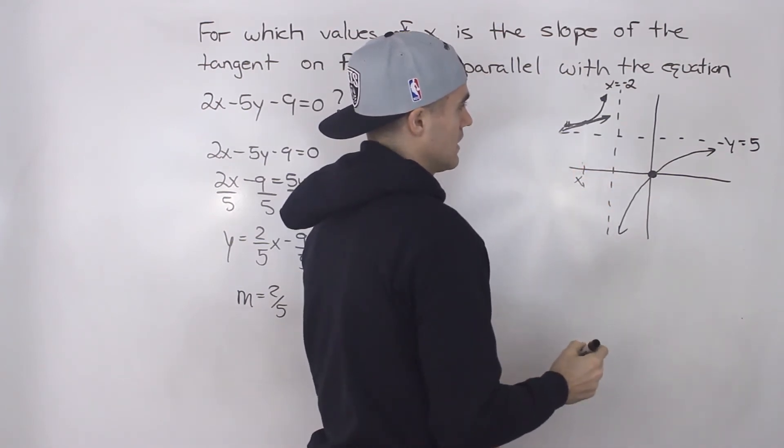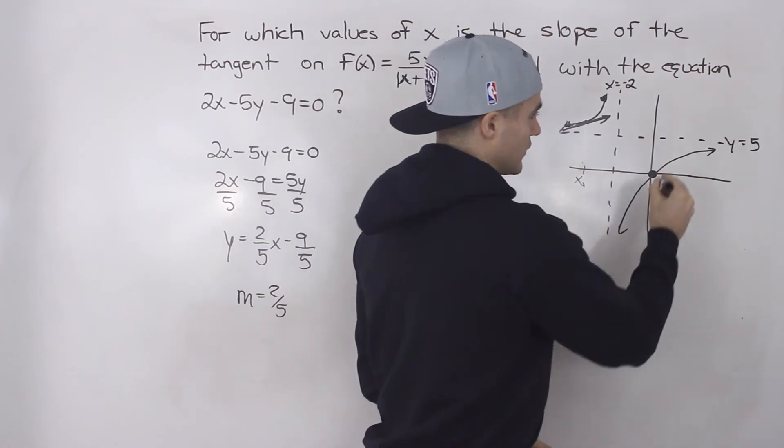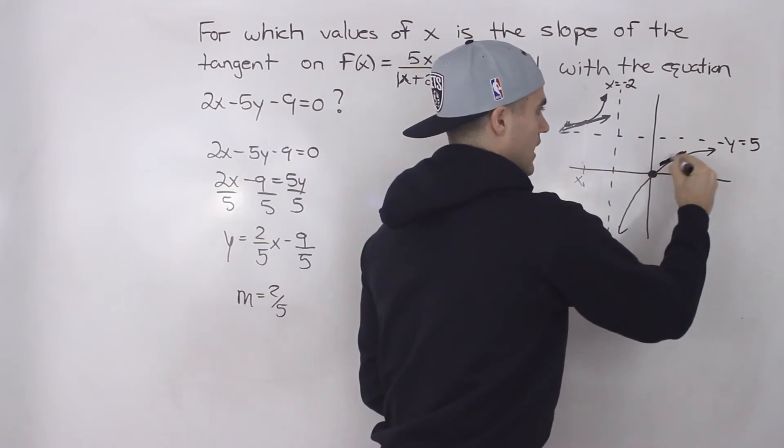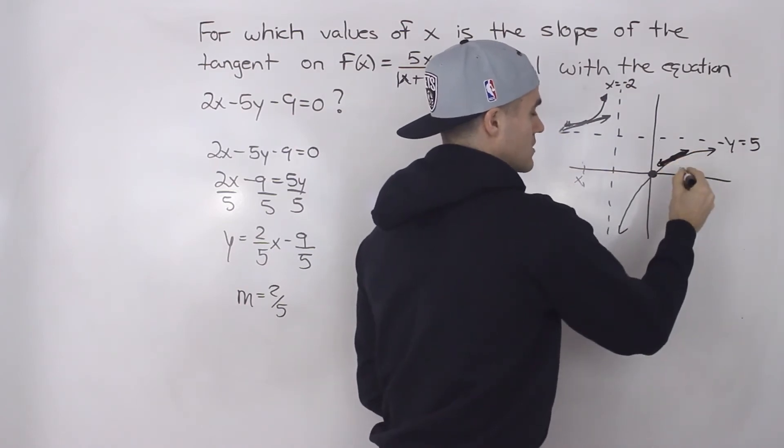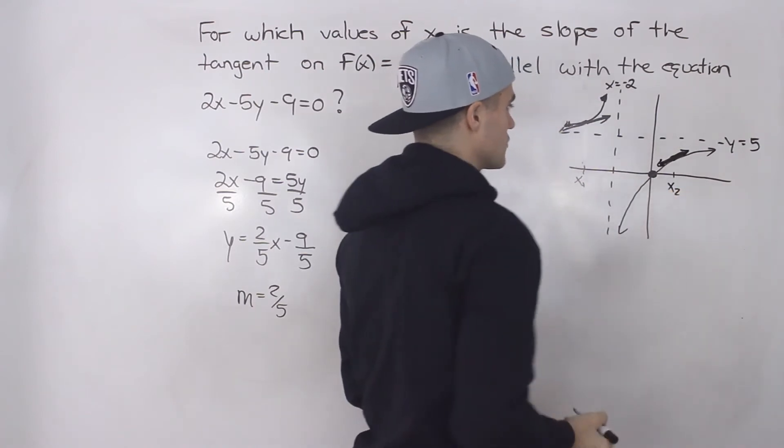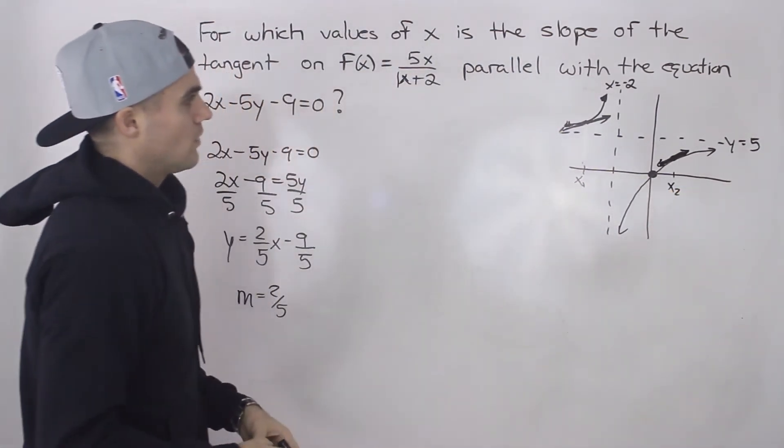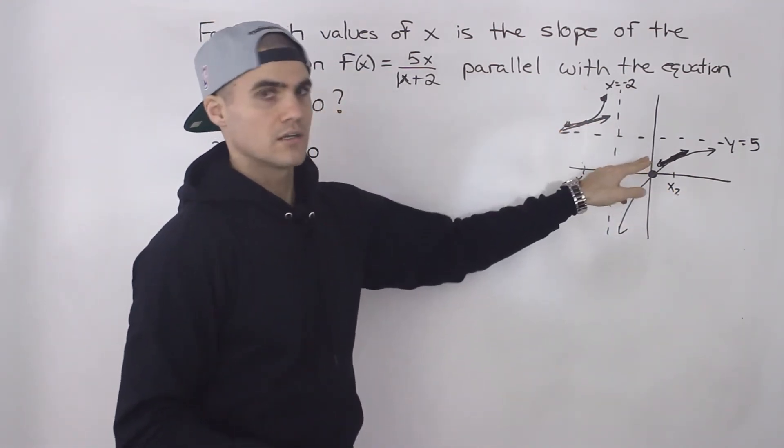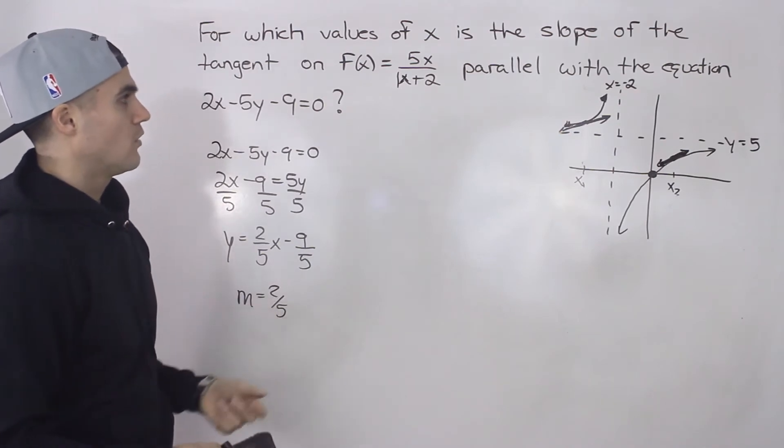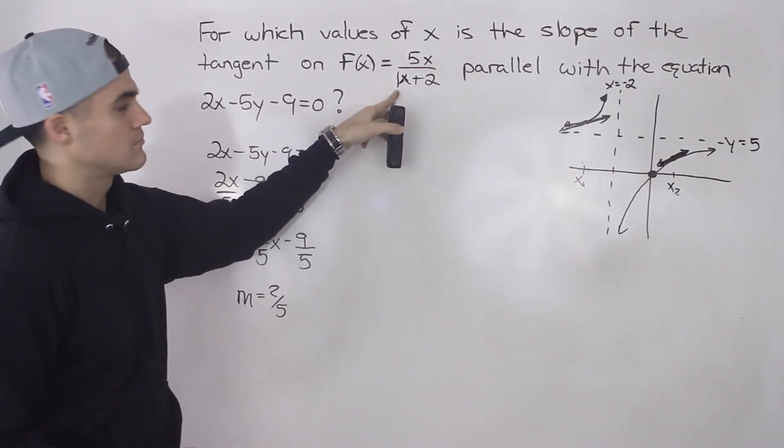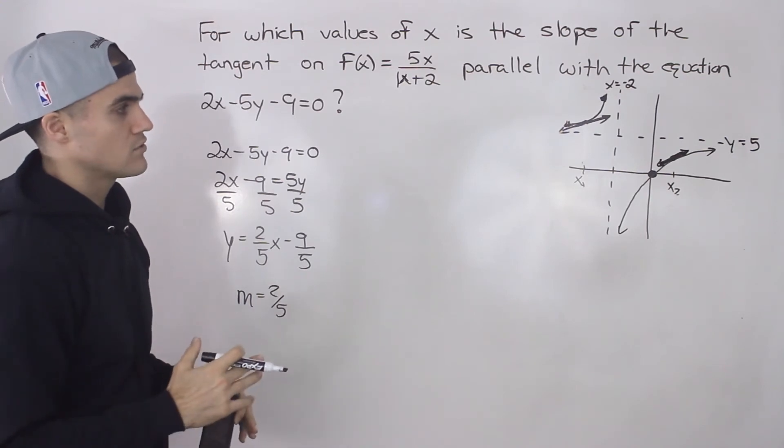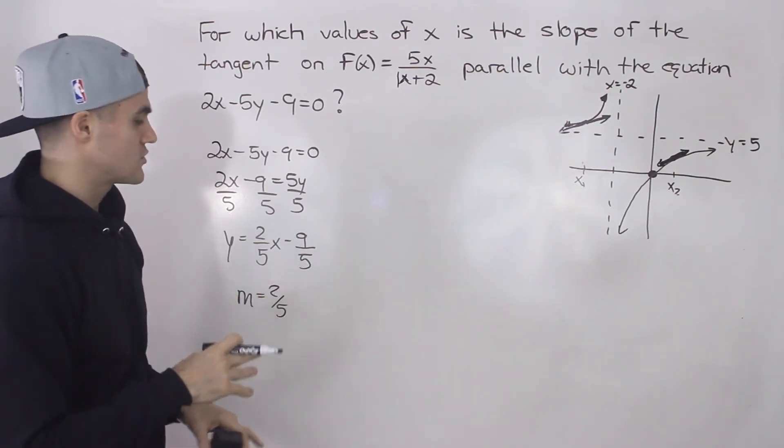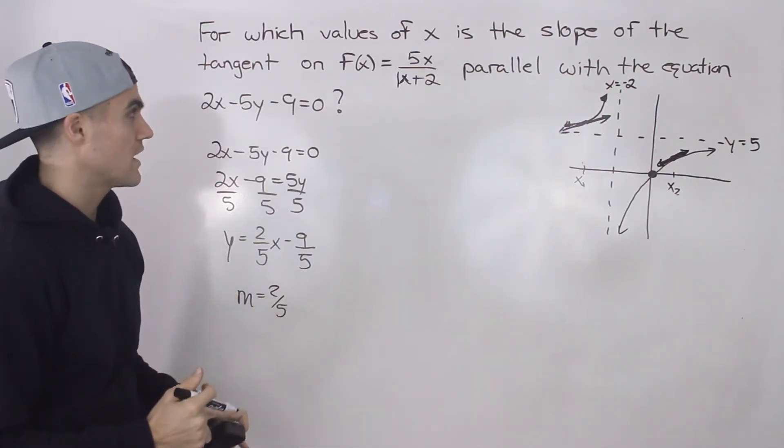We've got to find the x value of where that happens. So let's label that x. And then perhaps a slope of 2 over 5 can also occur on the function here or anywhere. But let's just guess over here for now. We're going to actually solve for the actual x value where it happens. So how do we find that? How do we find the x values for which the slope of the tangent is equal to 2 over 5? Well, we first got to find the derivative of this function. Because the derivative will give us the value of the slope of the tangent at any x value. And then we just have to take that derivative, make it equal to 2 over 5, and solve for the x values.